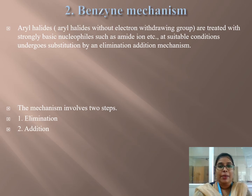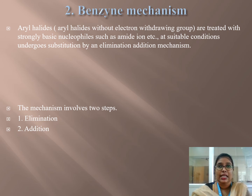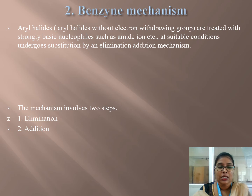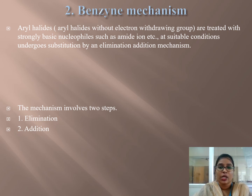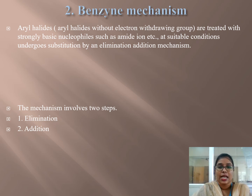The second mechanism is the benzyne mechanism. Benzyne is an intermediate or transition state — highly unstable and not normally existing, but it contains a triple bond in the benzene ring structure, making it analogous to an alkyne derivative. Aryl halides without any electron-withdrawing (activating) groups are treated with strongly basic nucleophiles, such as ammonia, amide derivatives, or potassium amide, and at suitable conditions they undergo substitution by an elimination-addition mechanism.